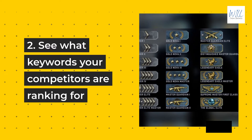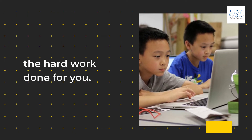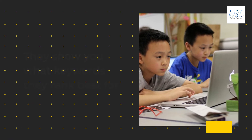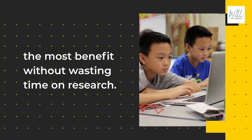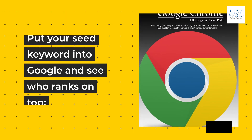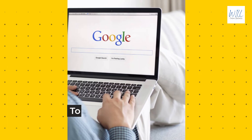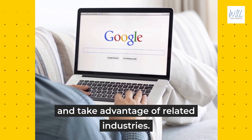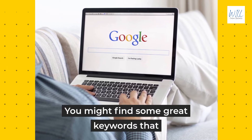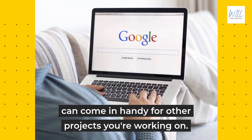Second, see what keywords your competitors are ranking for. Most companies already have all the hard work done for you — they show you what keywords they rank best for, so you can take the ones that give you the most benefit without wasting time on research. Put your seed keyword into Google and see who ranks on top. Third, to find almost unlimited keywords, do this over and again and take advantage of related industries. You might find some great keywords that can come in handy for other projects you are working on.